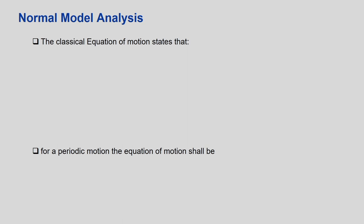The classical equation of motion states Newton's law: m·(d²ηi/dt²) = Fi, where Fi is the force acting on the i-th atom. This force can also be found by taking the derivative of the potential energy with respect to the coordinate - the negative derivative of PE with respect to the relative coordinate gives the force acting on the i-th atom.